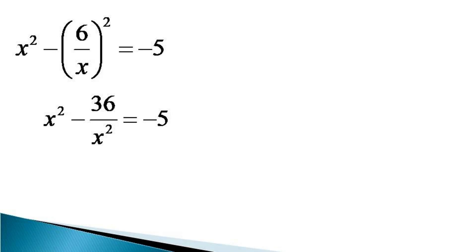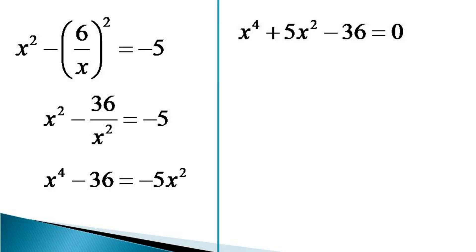Multiplying by x squared, we get x to the power 4 minus 36 is equal to minus 5x squared. And after rearranging, we get x to the power 4 plus 5x squared minus 36 is equal to 0.